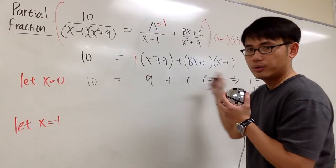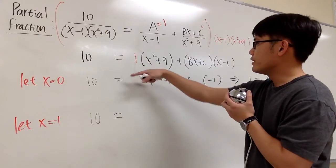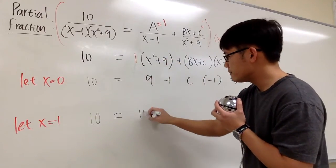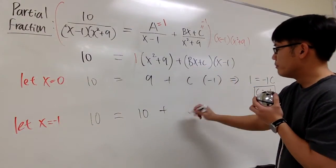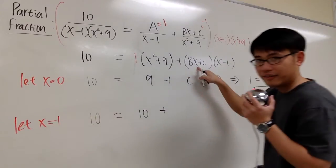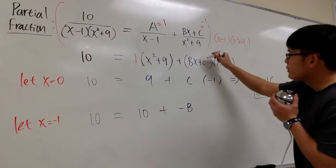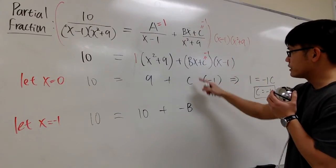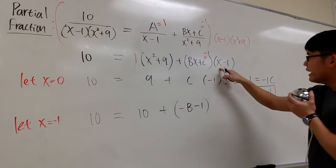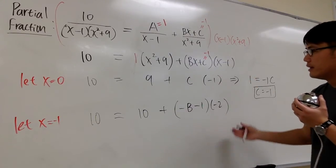Look at this equation right here. Plugging x equal to -1 into all the x. We have 10 equals to. The 1 doesn't matter. But then (-1)², which is 1, 1 + 9 is 10. Plus, B we don't know. But then B times x, x is equal to -1. So we have -B. C we know is -1. So we can just have -B - 1. And then x is equal to -1. -1 - 1, which we have -2. So that's what we have.